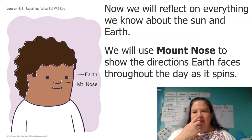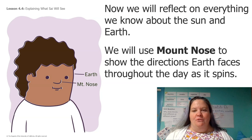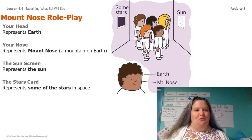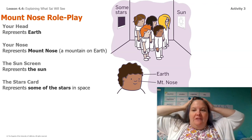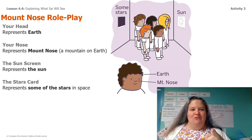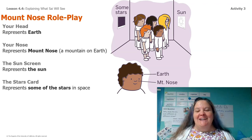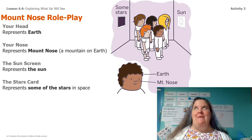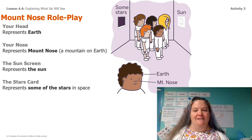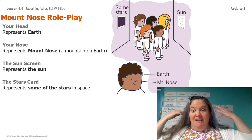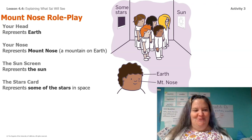We're going to do our Mount Nose activity one more quick time to show the directions earth faces throughout the day as it spins, to help us really remember where the sun is in the sky. Let's do the Mount Nose role play. Your head represents the earth. Your nose is Mount Nose. The screen is going to be the sun. Normally I use the sun puppet but I kept messing it up, so instead I put a sun on the slide. I have a stars card behind me, but even if you don't have a stars card, anytime you're not looking at the screen, you can imagine there are stars behind you. Let's try this together.